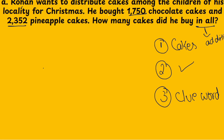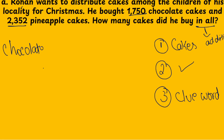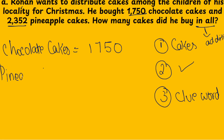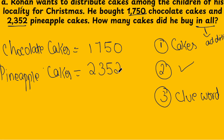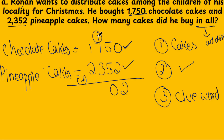We are going to add these two numbers. Chocolate cakes: one thousand seven hundred and fifty. Next, we have two thousand three hundred and fifty-two pineapple cakes. Now, do the addition — come from the back: zero plus two is two, five plus five is ten.